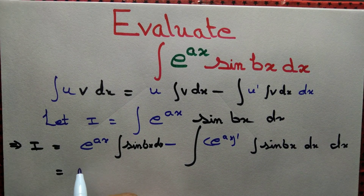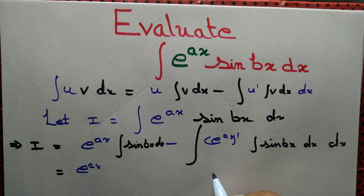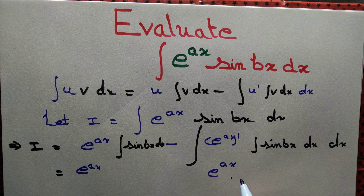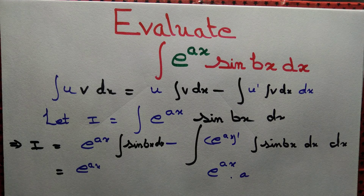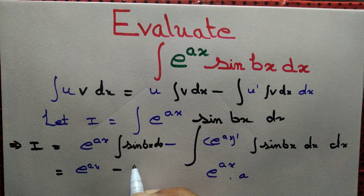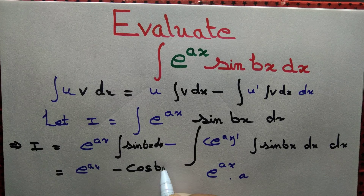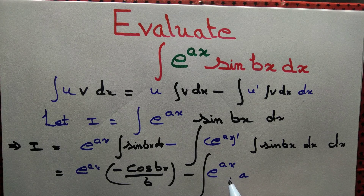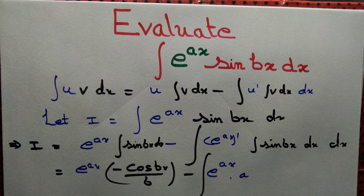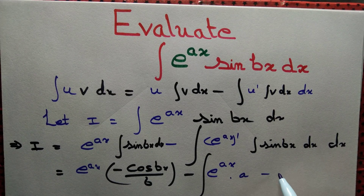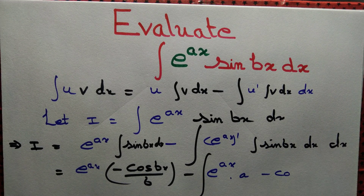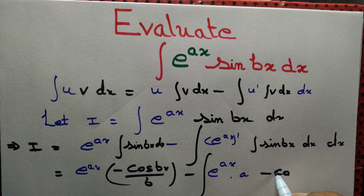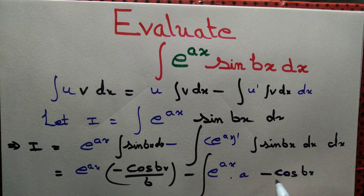The derivative of e to the power x is equal to e to the power x. We apply the chain rule and differentiate x with respect to x. The integral of sin bx is minus cos bx by b. So minus the integral of: derivative of e to the power x is e to the power x, into the integral of sin bx, which is minus cos bx by b.